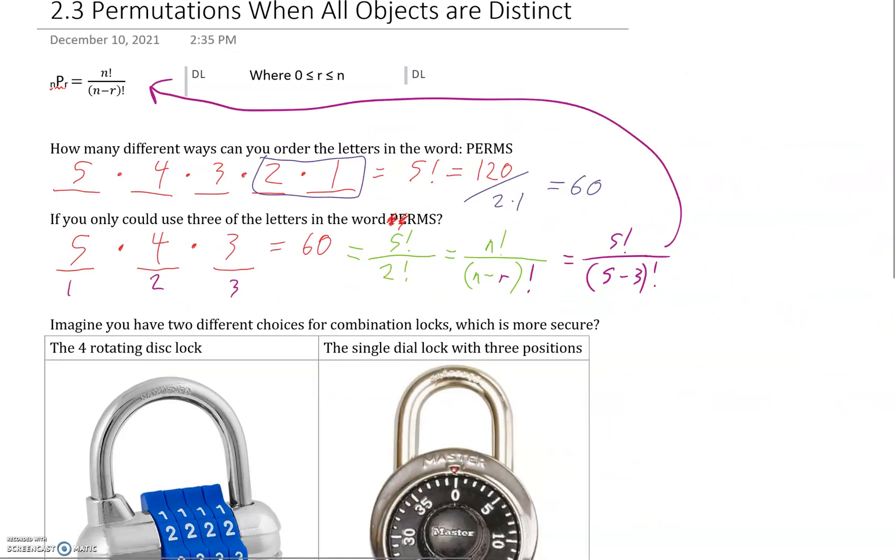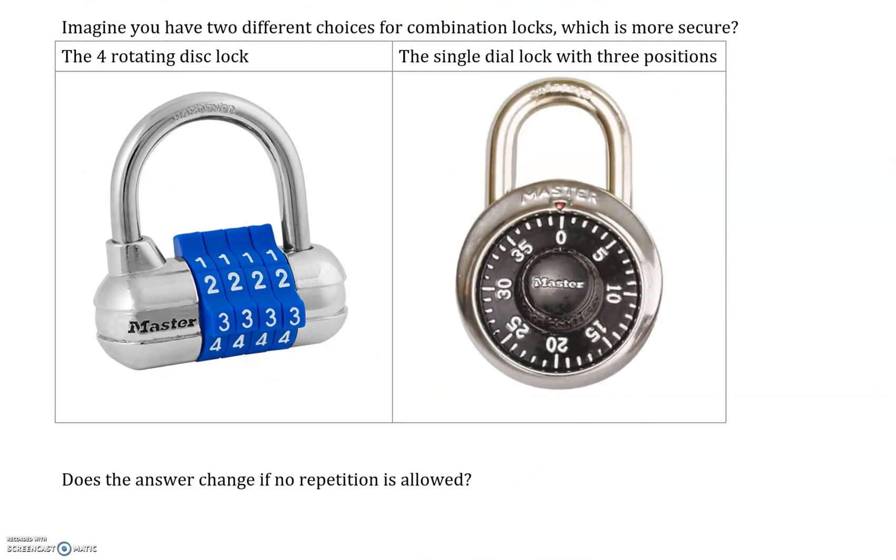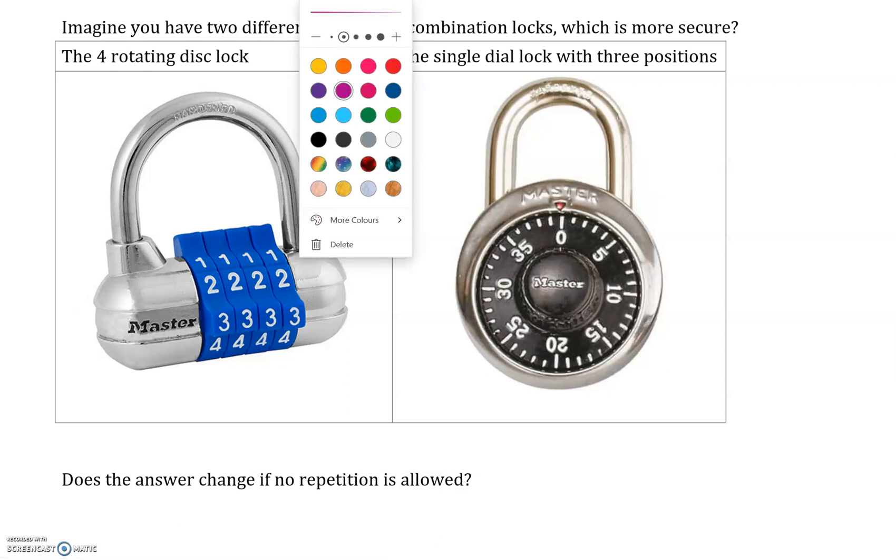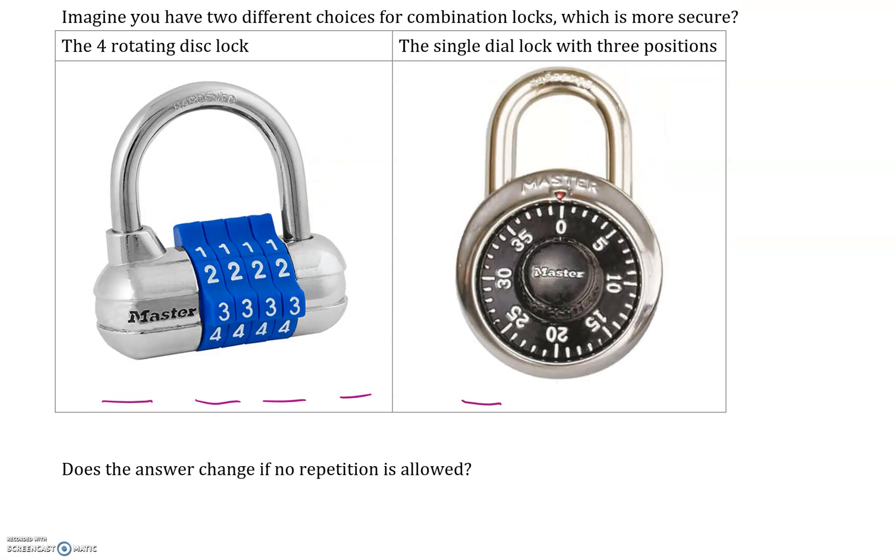Imagine you have two different choices for combination locks. Which is more secure? A four rotating disc lock, or the single dial lock with three positions. The first thing we have to do is make our four discs for the one on the left, or the three positions for the one on the right. And we're going to be multiplying, obviously, this is again our fundamental counting principle to get our answers.